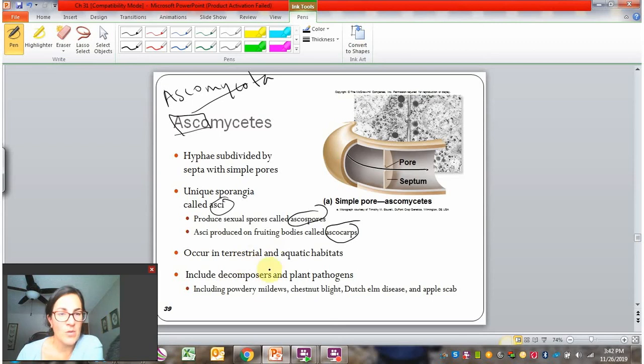We see these ascomycota in terrestrial and aquatic habitats. They include a lot of different fungi, including a lot of decomposers and some well-known plant pathogens. Powdery mildews, chestnut blight, Dutch elm disease, and apple scab are just a couple of examples.